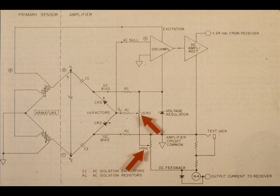The zero and span potentiometers are in the right lower center section. These adjustments are interacting. If one is altered, the other must be rechecked.